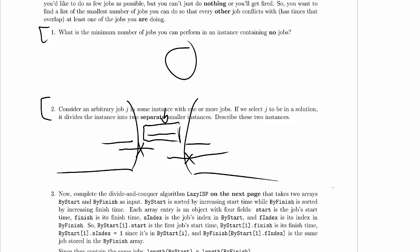So we do know that they are separate and how can we describe them? The left instance contains all jobs with finish times